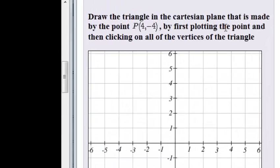Draw the triangle in the Cartesian plane that is made by the point. They give us the coordinates of a point P(4, -4), by first plotting the point and then clicking on all the vertices of the triangle.